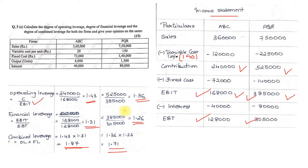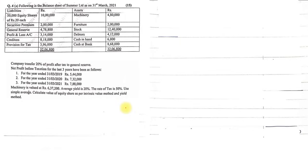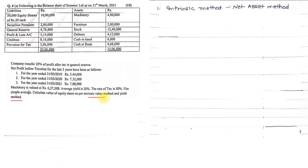The next question is Question Number 4A, worth 15 marks. The balance sheet of Summer Limited is given with equity shares, security premium, liabilities, and assets. The company transfers 20 percent of profit after tax to general reserve. Three years' profits are provided, machinery is valued at 6,37,200, average yield is 20 percent, rate of tax is 50 percent. Using simple average, calculate the value of equity shares as per the Intrinsic Value Method and the Yield Value Method.